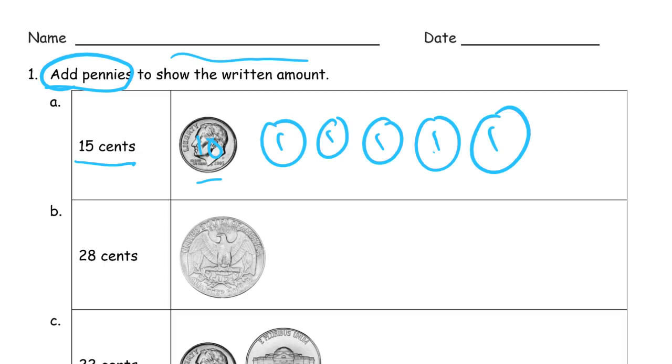28 cents. So the quarter is 25. So we need 26, 27, 28, 3 more pennies.